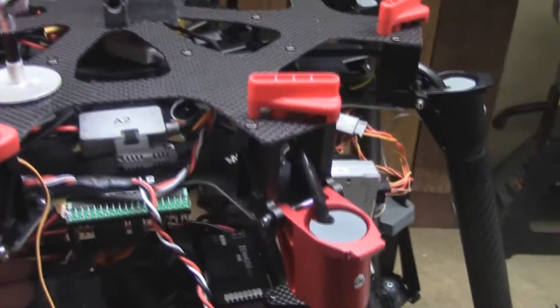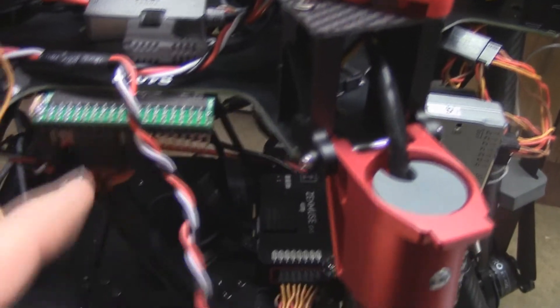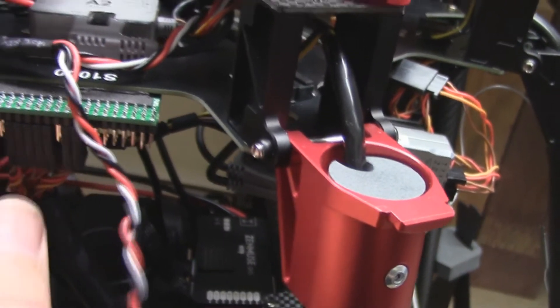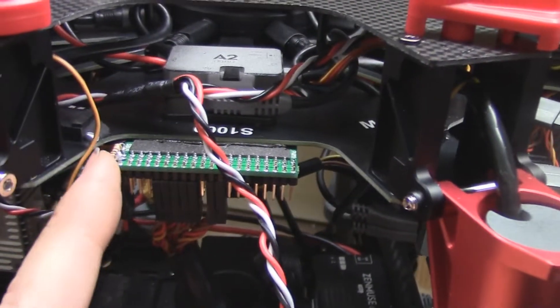One of the connectors on the Y harness will go into, this is the SBUS decoder right here, and just plug it into the D-Bus SBUS connector right there.